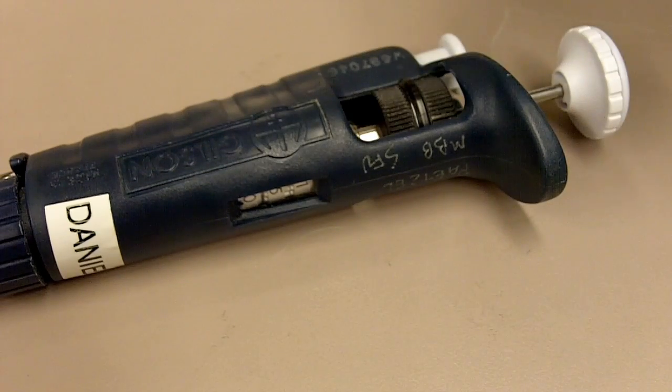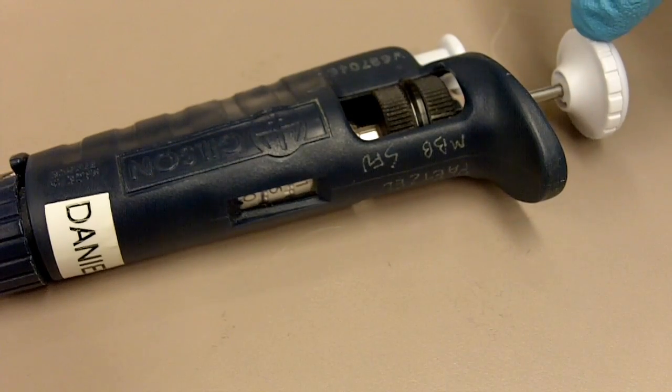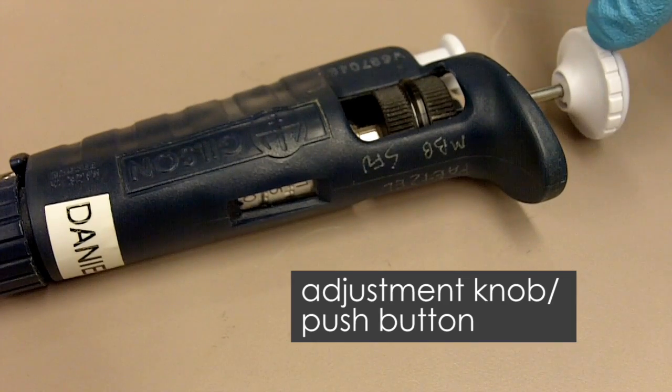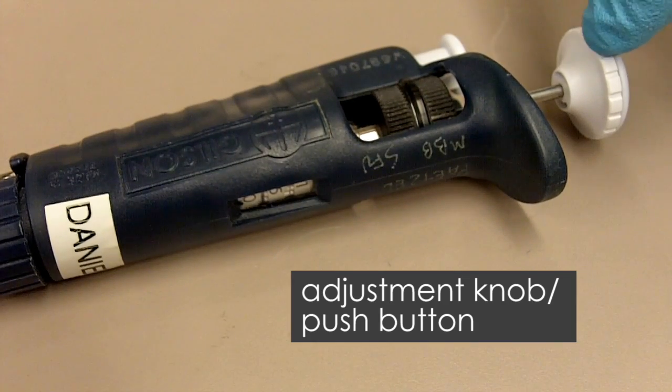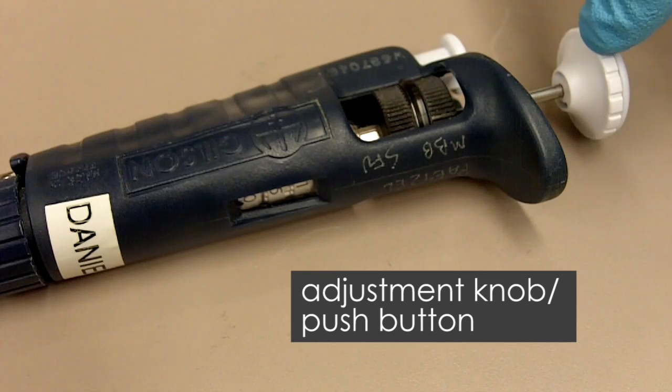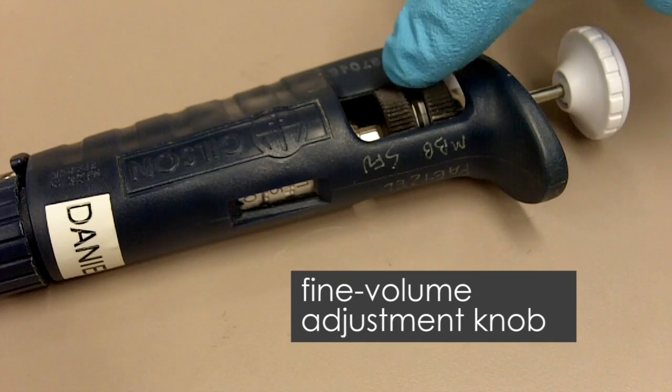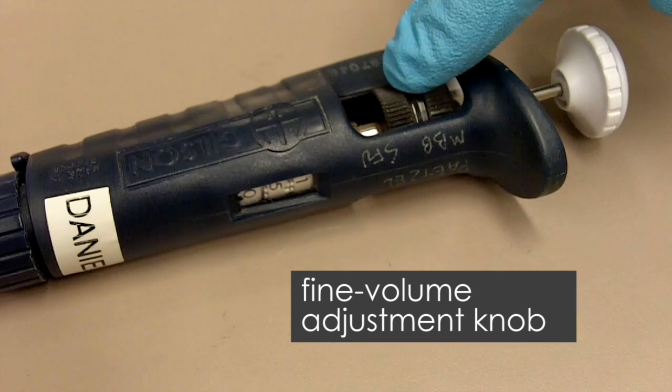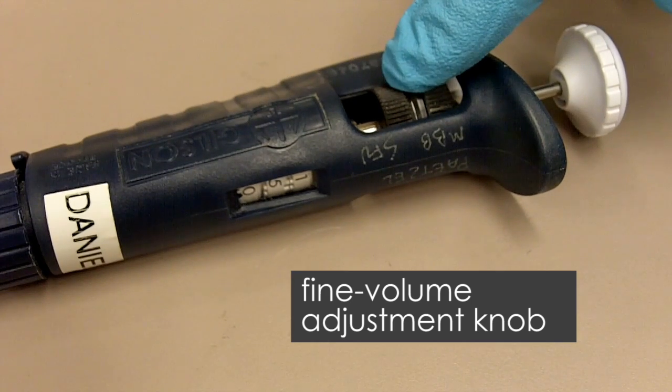And if we look at here, here is the knob that allows you to change the volume. It's also the push button to operate the pipette. And here is the fine tune adjustment knob to change the volume.